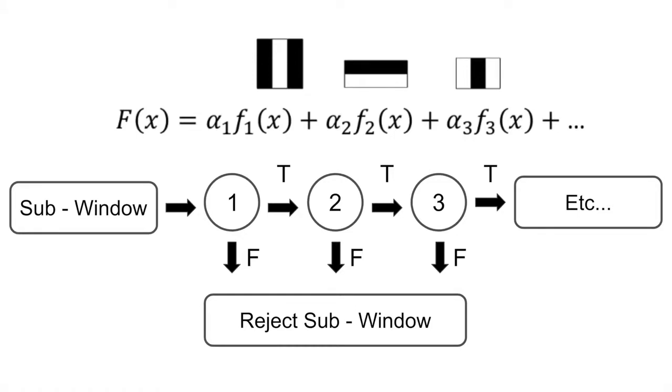Cascading works by looking for one feature and if that feature is not found within the box, the algorithm will then move on to the next box. However, if the feature is found within the box, the algorithm will then look for the next feature.